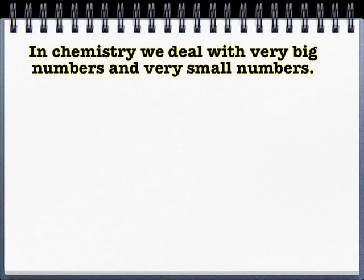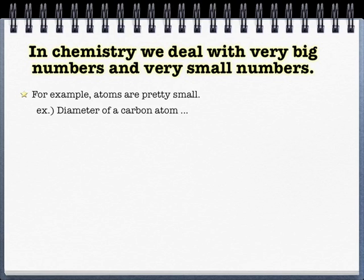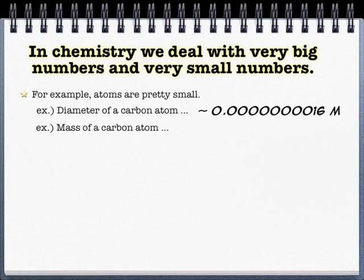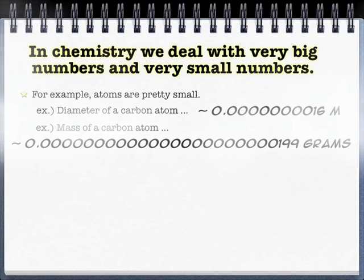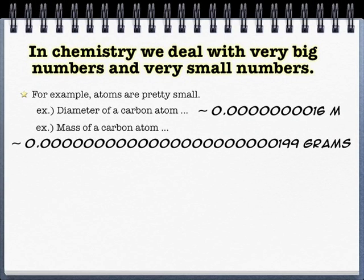And so again, we have to deal with big or small numbers in chemistry. Atoms are small, if no one has told you that already. They have pretty tiny diameters, like for example carbon. You're dealing with an extremely tiny diameter in meters. And something like a carbon atom, in terms of mass, is going to be also a tremendously small number. And those many zeros essentially renders that useless in most mathematical calculations. Keeping track of all that would be a nightmare.